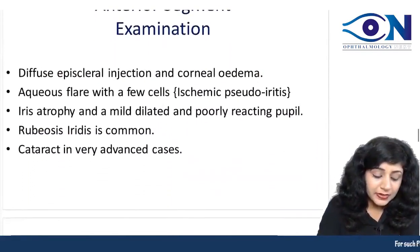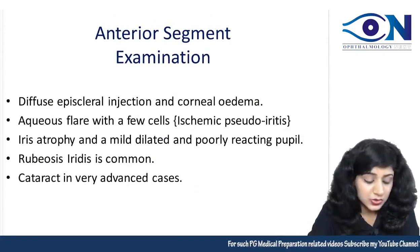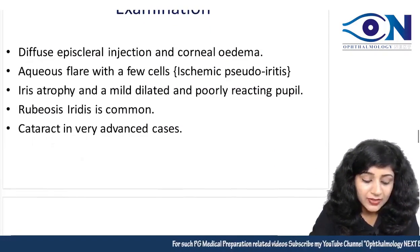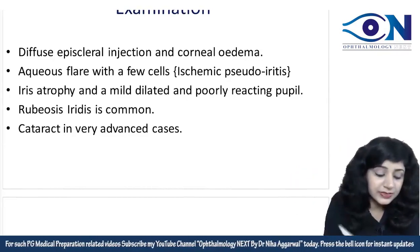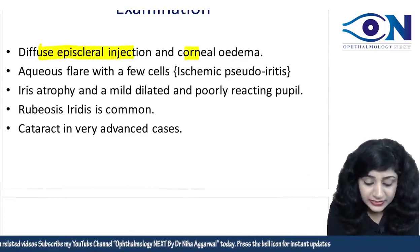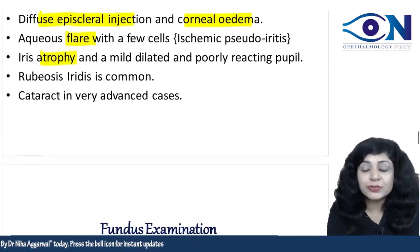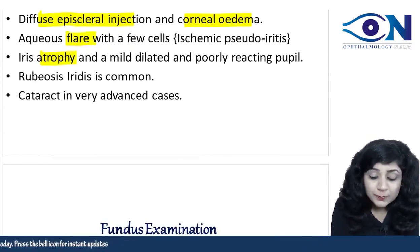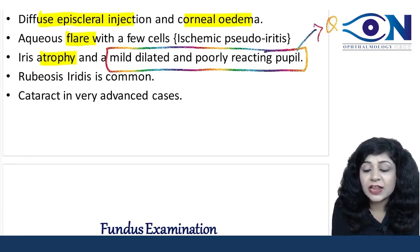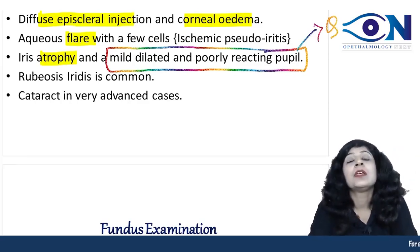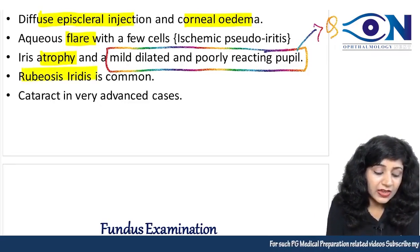On anterior segment examination, findings include diffuse episcleral injection, corneal edema, flare, and patches of iris atrophy. Crucially, the pupil is not constricted but rather mid-dilated and poorly reacting — this helps differentiate it from true uveitis. It is pseudoiritis. We also find rubeosis iridis, cataract, and cupping.